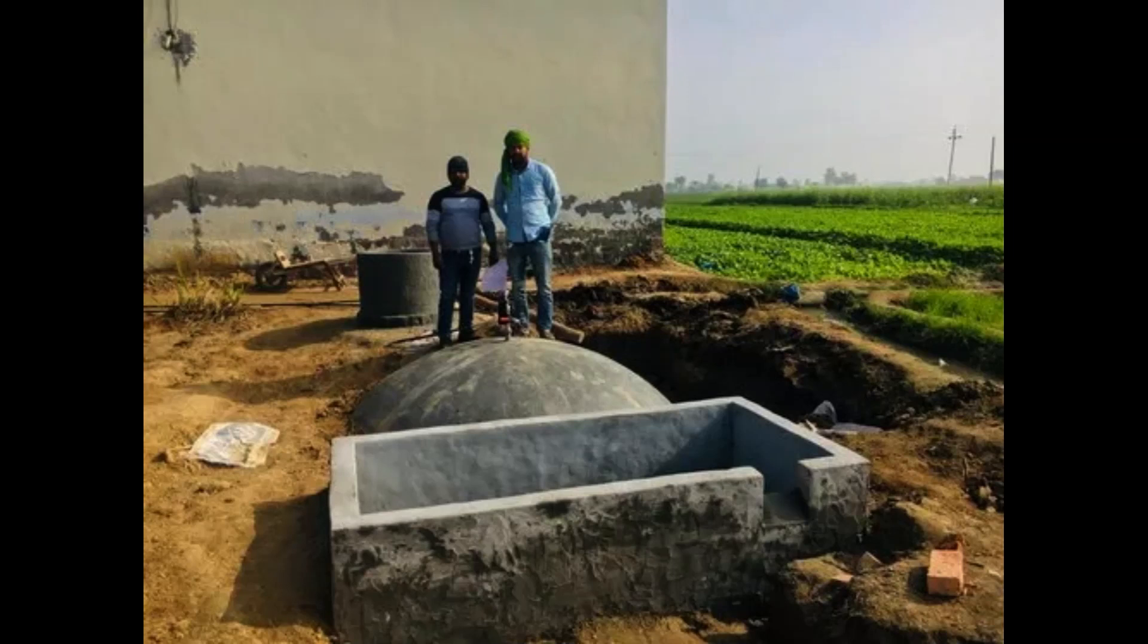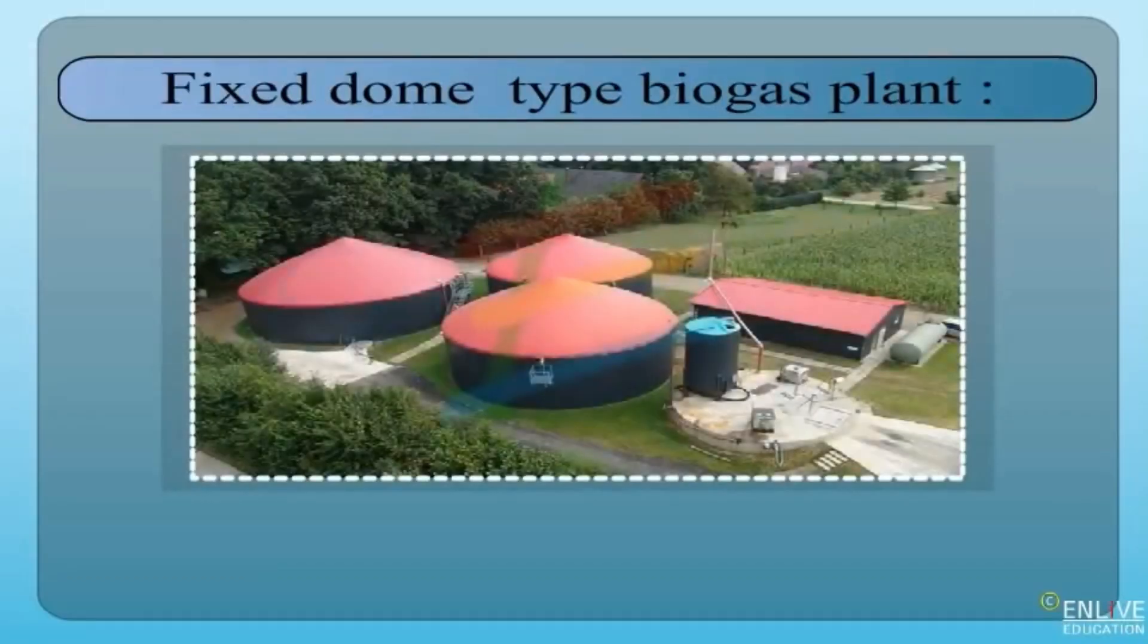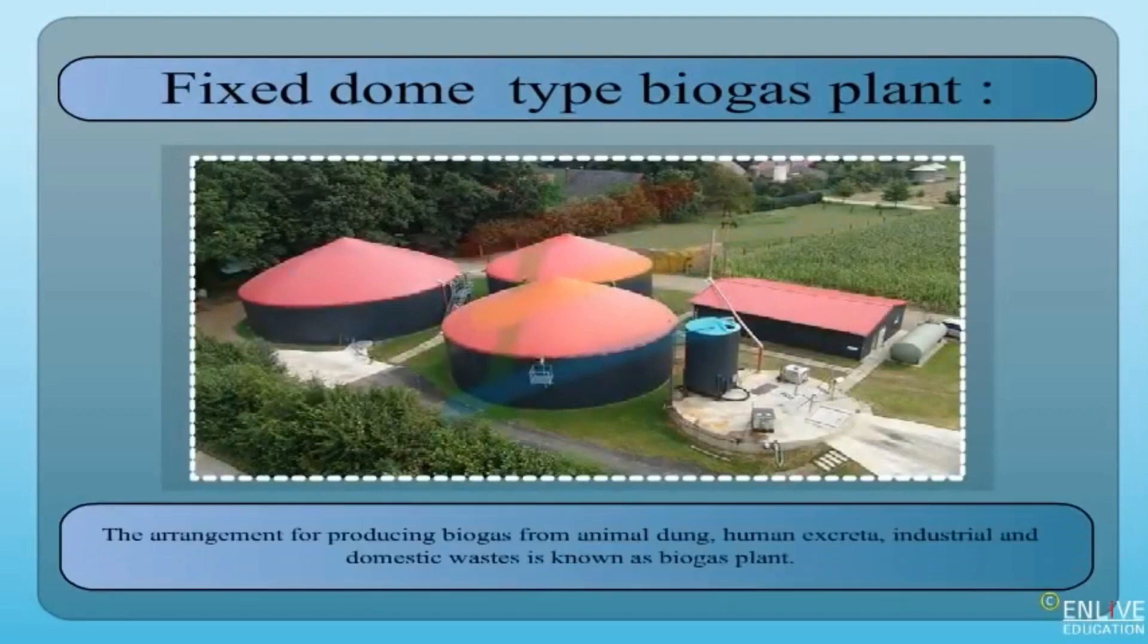Design and Planning: Decide on the size of the system based on the amount of organic waste you have and your energy needs. Choose a suitable location with good access for feeding, maintenance, and gas collection.